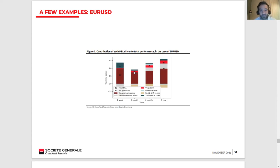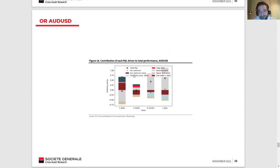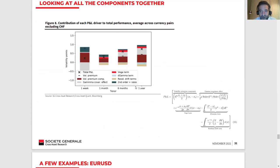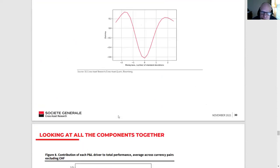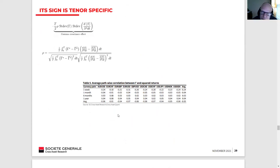Mindful of time, a question arises about the gamma covariance term and the sign of rho. Looking at the correlation table: for one-week options the average is around minus 24%, and across currency pairs there is not much variation — whichever pair you look at, rho is around that same number for a given tenor. For one-year options it's around 0.4. There seems to be a strong empirical pattern where rho depends on tenor much more than on the underlying.